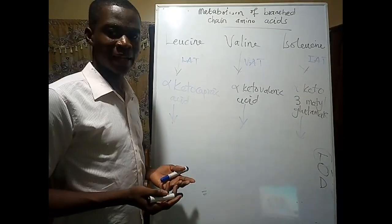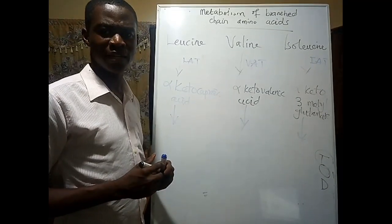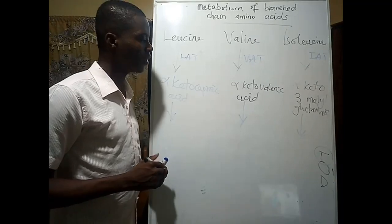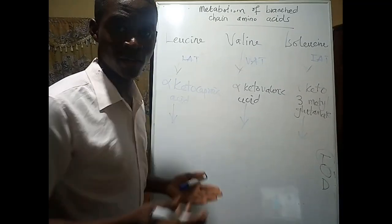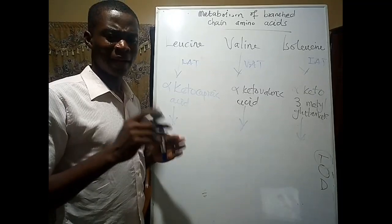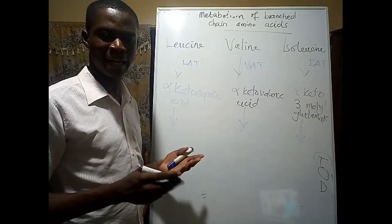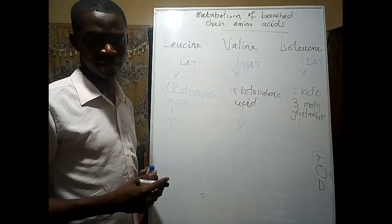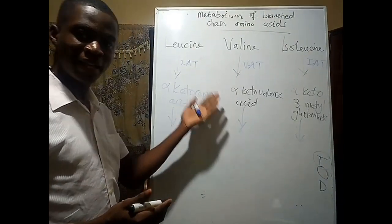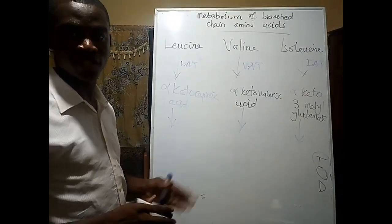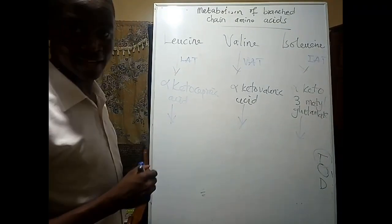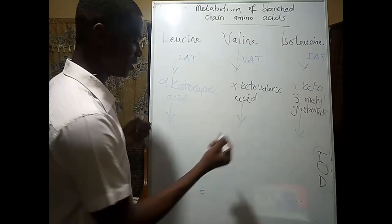In previous lectures when we looked at the Krebs cycle, we talked about alpha-ketoglutarate dehydrogenase and saw that it required specific coenzymes to enhance its activity. This alpha-keto acid dehydrogenase also requires those same coenzymes.